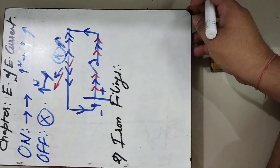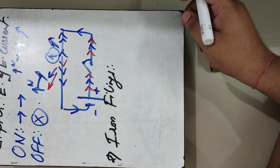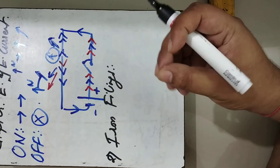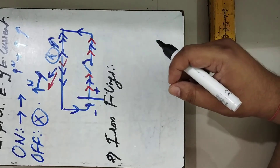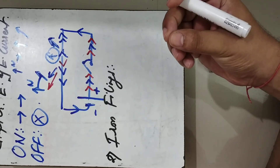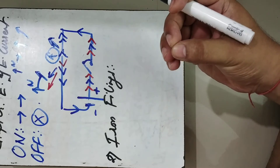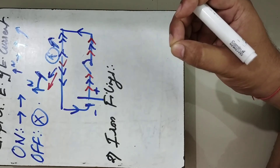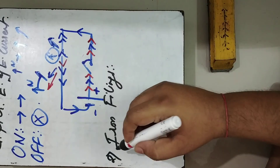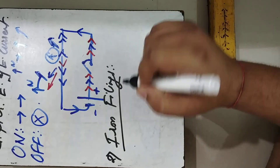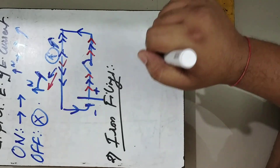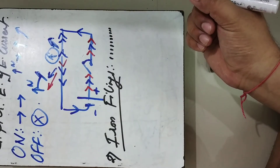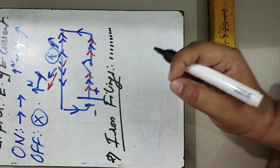Iron filings — to explain in simple terms, you may have seen a carpenter working with wood. When wood is cut, a very fine powder-like material comes out, like sawdust. Similarly, iron filings are iron that has been ground into very tiny, thin, small pieces — extremely fine particles of iron.